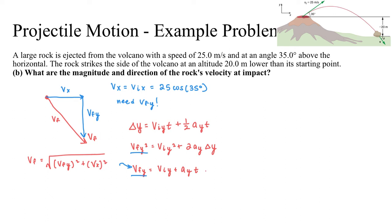So if I were to use this equation, then that would give me something that looks like this. v_fy is equal to my initial velocity in the y direction, which if I go back to the previous slide, is 25 sine 35 degrees.